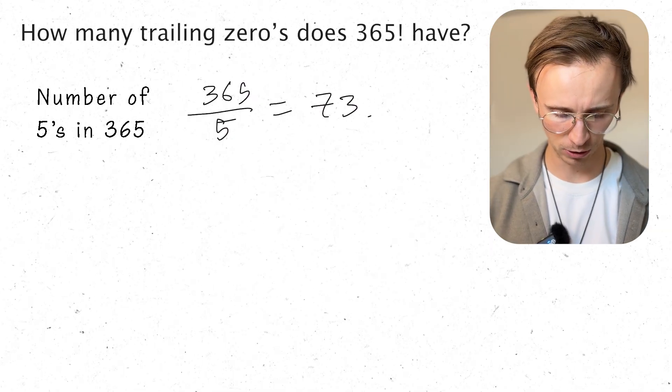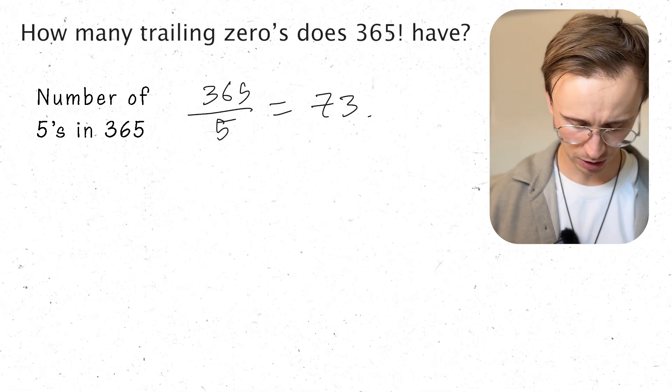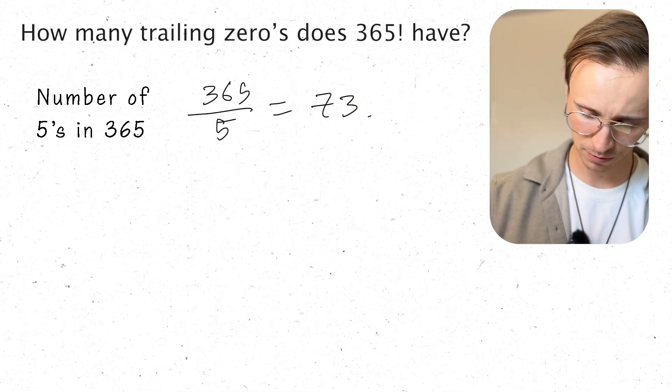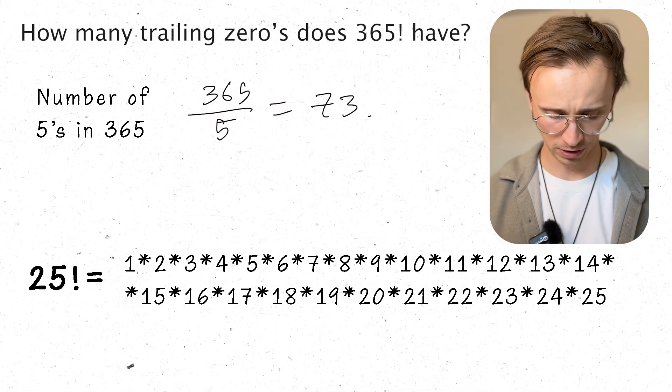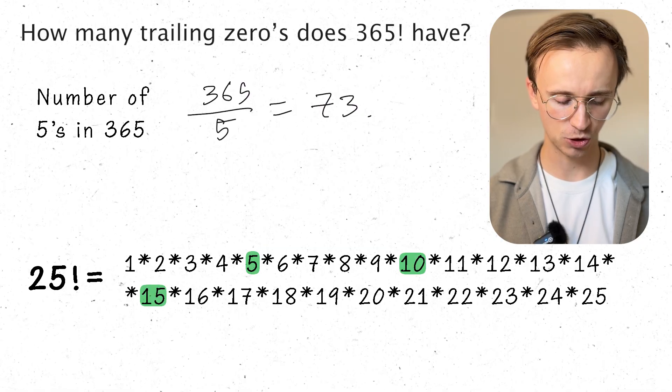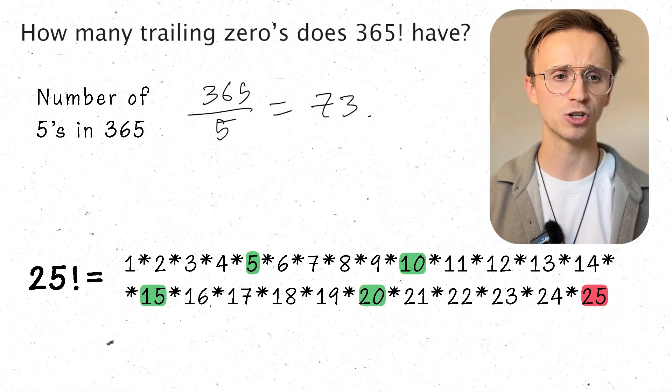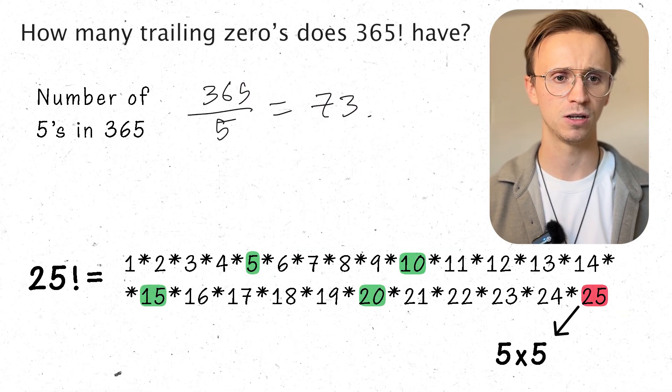Well let's again think about a lower number. I don't know, 25 factorial. Well I'm going to have 5s coming from 5, 10, 15, 20. But then 25 is going to give me 2 5s, because it's 5 squared.